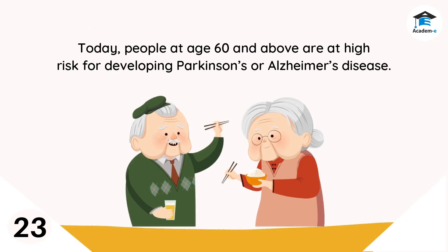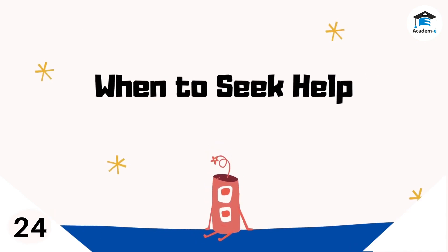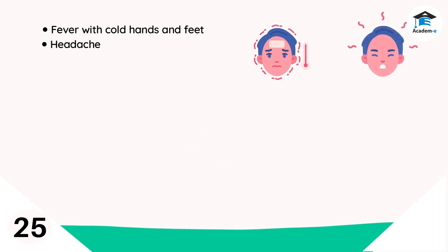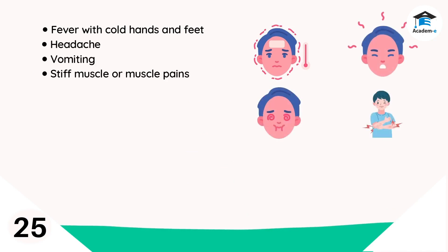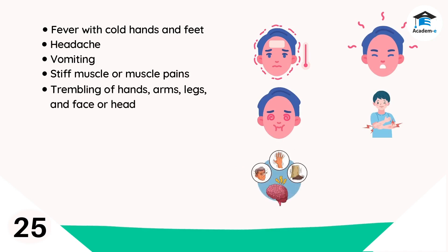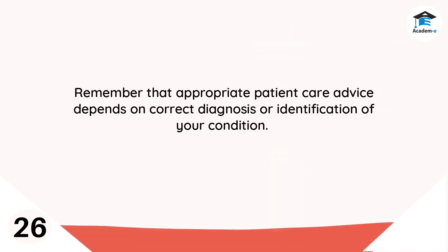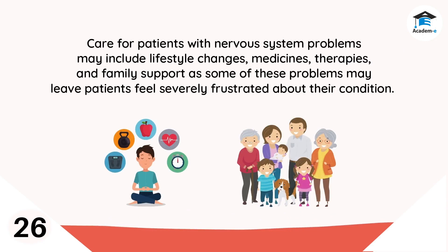People at age 60 and above are at high risk for developing Parkinson's or Alzheimer's disease. Schedule a visit to a neurologist when you feel a combination of the following: fever with cold hands and feet, headache, vomiting, stiff muscles or muscle pains, trembling of hands, arms, legs, face, or head, movement coordination and balance problems, vision problems, enlargement of the head or bulge formation, or a consistent pattern of forgetfulness. Remember that appropriate patient care depends on correct diagnosis. Care may include lifestyle changes, medicines, therapies, and family support.